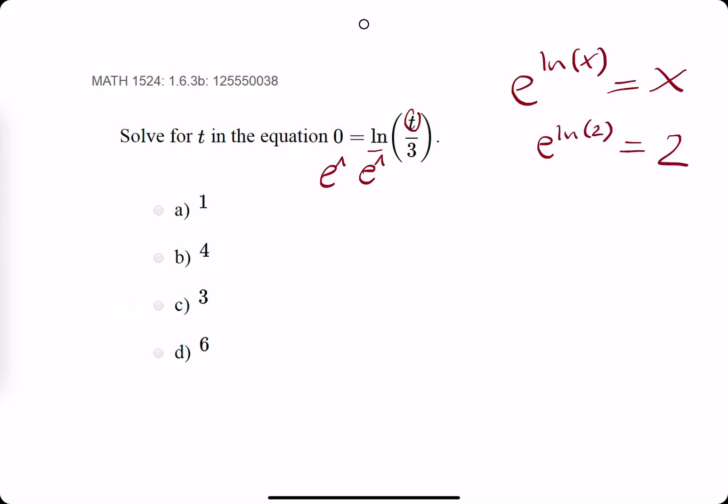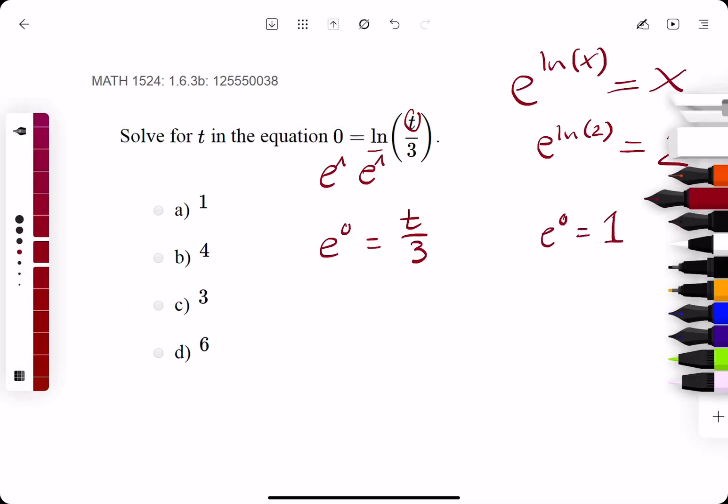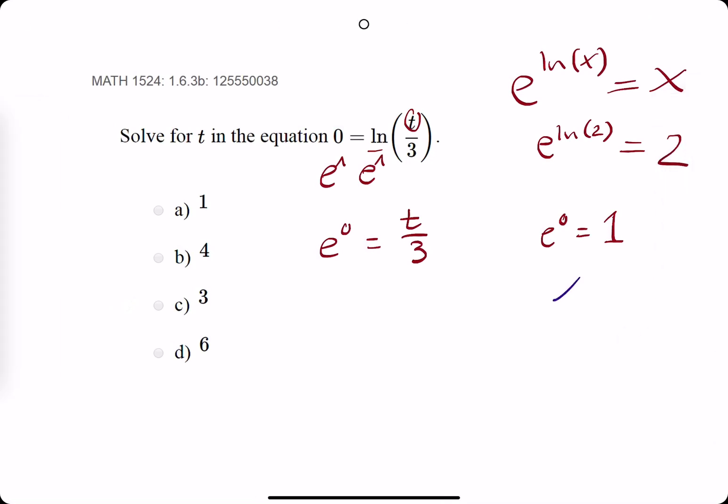And so here where we have e to the 0 on the left side, we'll leave it as that for now. Then we have e to the ln of t over 3, which leaves us with just t over 3 because e and ln cancel each other out. So then e to the 0 is equal to 1 because we'll write a little rule over here. Anything to the 0 power is equal to 1.